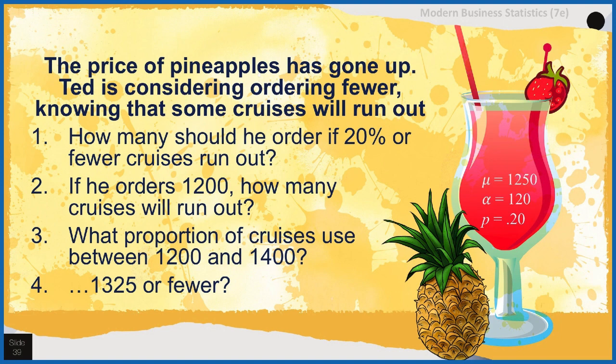Now the price of pineapples has gone up, so Ted is considering ordering fewer pineapples, knowing that some cruises will run out. How many should he order if he's okay with 20% or fewer cruises running out? Or if he orders 1,200, how many cruises will run out? What proportion of cruises use between 1,200 and 1,400? Or what proportion use 1,325 or fewer? To answer these questions, we'll use the Z formula tab in the multi-tool for normal distribution.